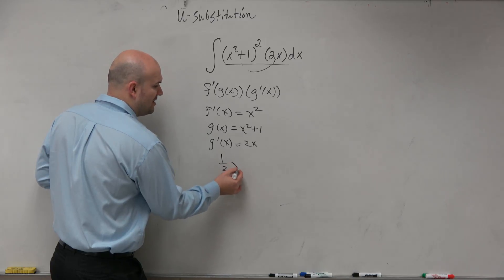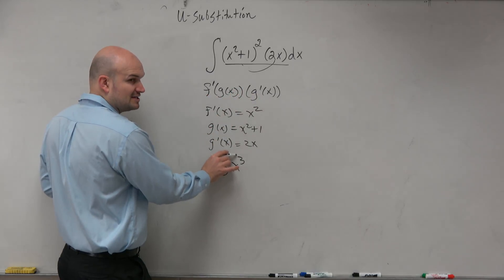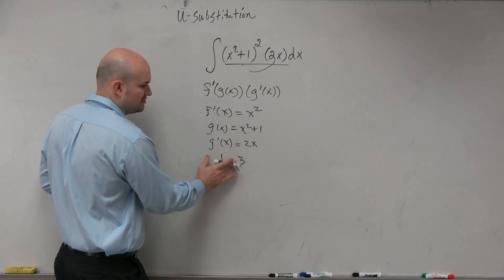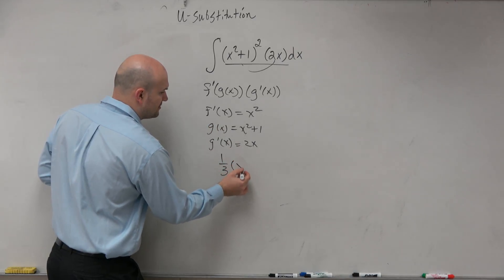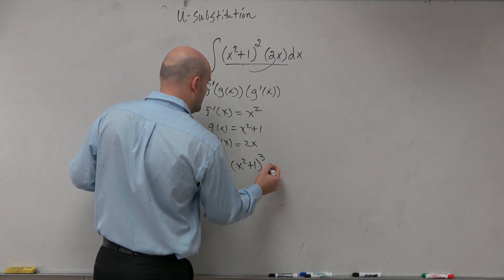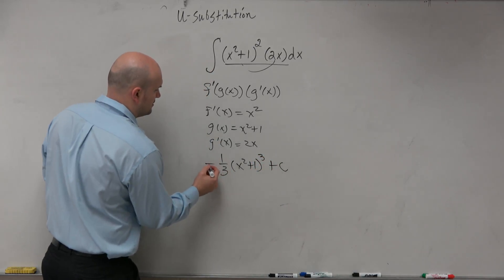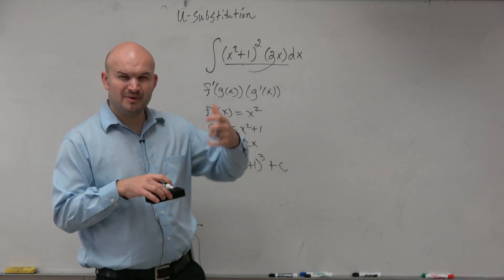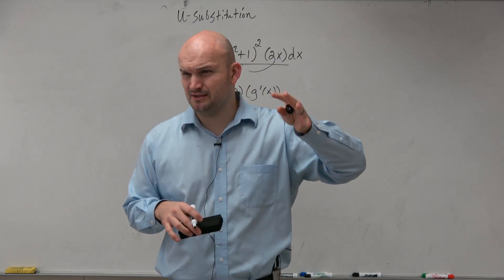But however, remember we're using the chain rule here. So instead of x cubed, we'd have to plug in what the g of x function is, which is x squared plus 1 cubed, and then plus c. All right? Now, some of you might be, it's kind of a little bit stretched mentally, all right? So let me give you another method, which we call u substitution.